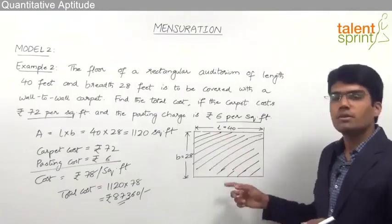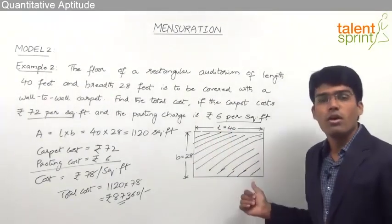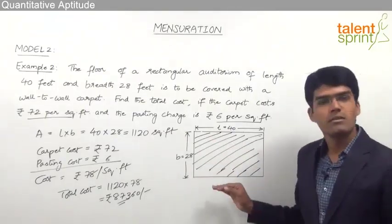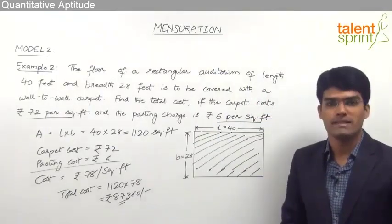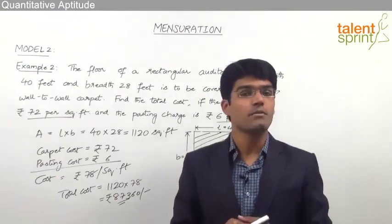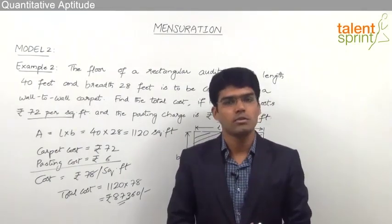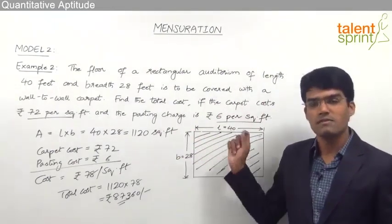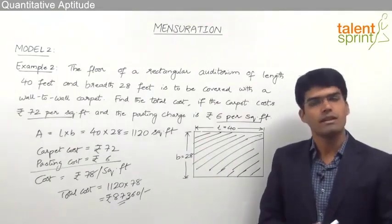Similarly, instead of a rectangular auditorium, it could be a square hall or a circular auditorium. Whatever the shape, first find the total area, then multiply by the cost per square feet to get the required answer. That is the key difference between the two examples: in Example 1 we worked on the perimeter, while in Example 2 we worked on the area.